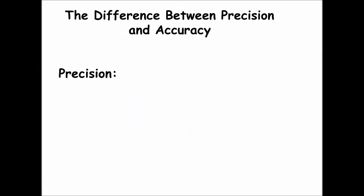Now we're going to talk about the difference between precision and accuracy. Most of the numbers that you use in science are going to be measurements. Each of those measurements that you make has a certain precision and a certain accuracy, and it's very important that you understand the difference between the two.